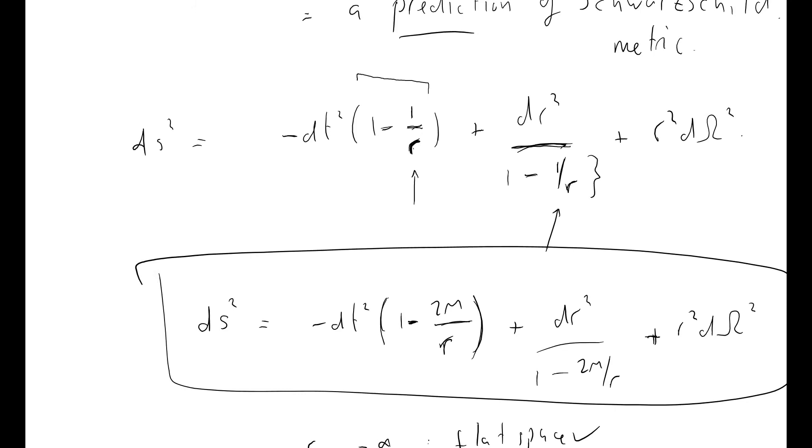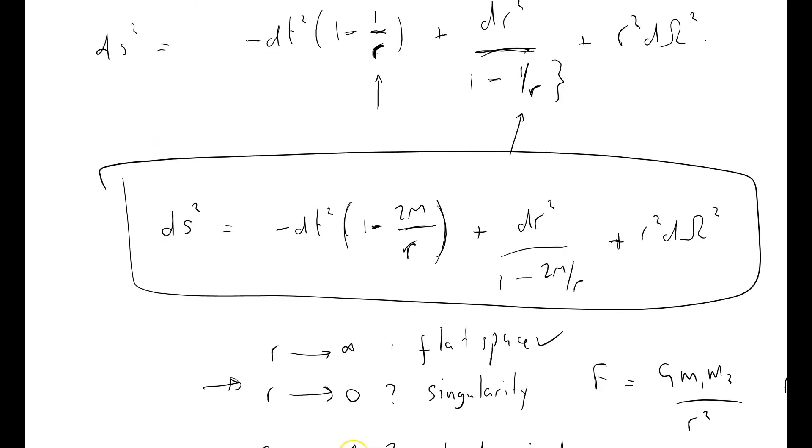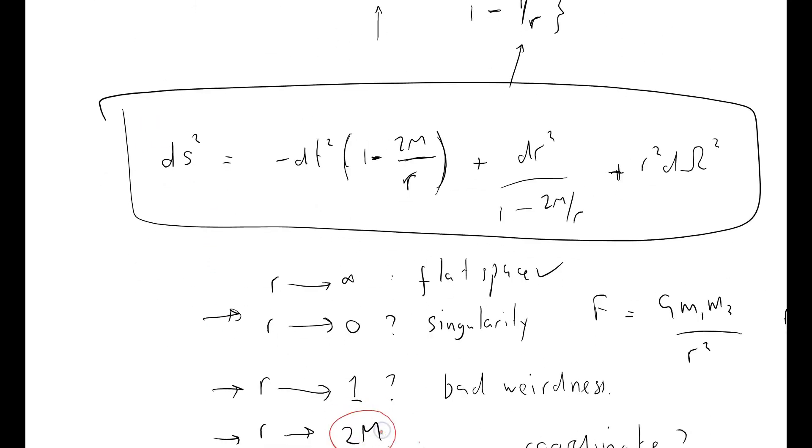We will see later that near r equals 1 or r equals 2m if you want to use these coordinates here. Near r equals 1, we have got a coordinate, you'd call it a coordinate singularity, or a coordinate mismatch, or a coordinate pathology, I think you'd call it, pathology, at r equals 1. We'll see later that we've got a coordinate pathology, but this is extremely non-obvious.